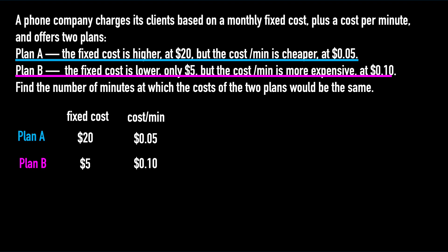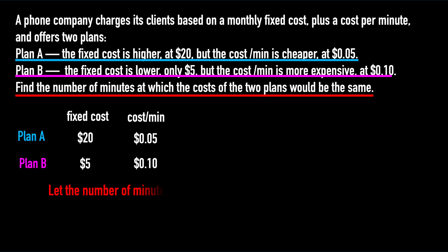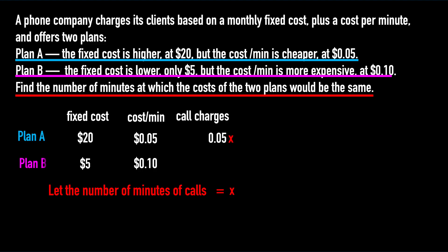To compare the two, we find the number of minutes at which the costs of the two plans would be the same. Let the number of minutes of calls be X. For Plan A, the call charges are 0.05 times X. For Plan B, the call charges are 0.10 times X. The total cost for Plan A is 20 plus 0.05X, and for Plan B it is 5 plus 0.10X.